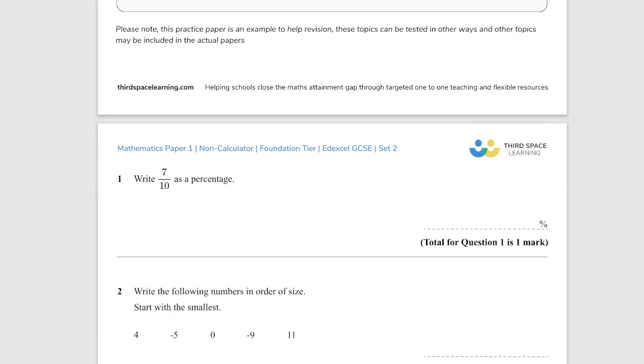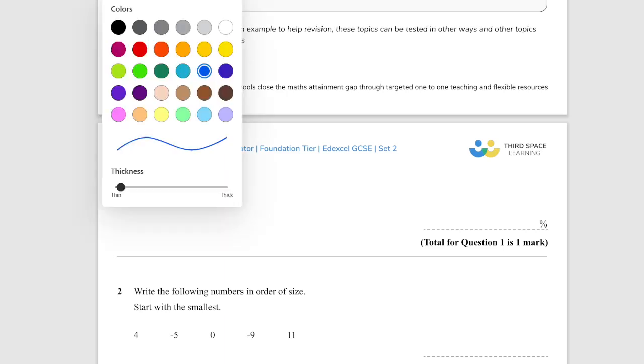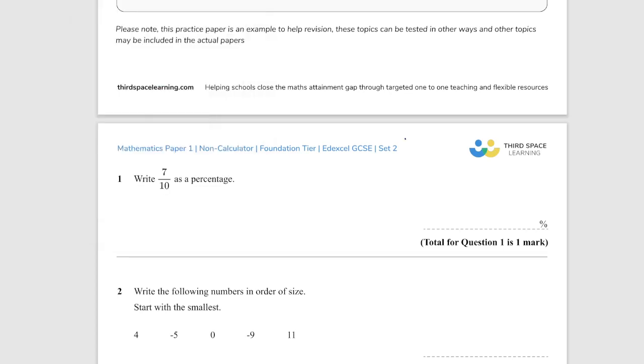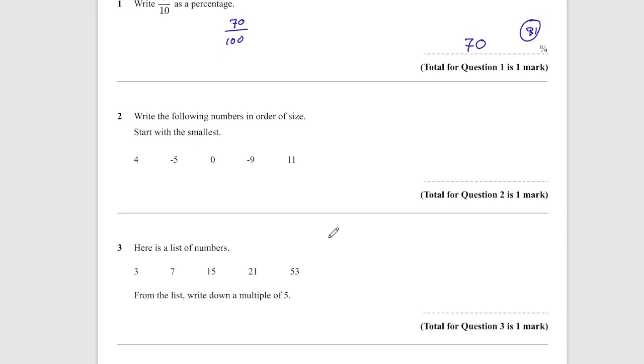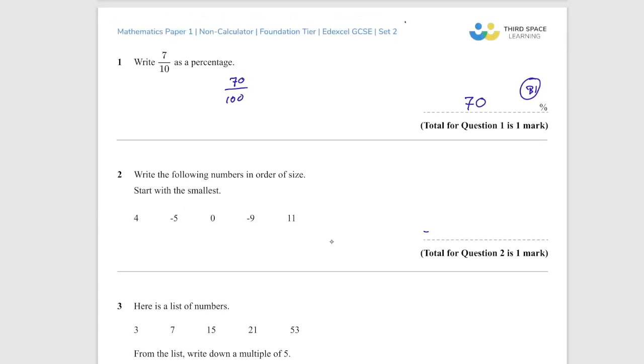Question 1, write as a percentage 7 tenths. So 7 tenths as a percentage, that's going to be the same as 70 out of 100, which is going to be 70%. That's a B1 mark. For question 2, write the following in order of size smallest first. So in this series we start with minus 9, minus 5, 0, 4 and 11. That's a B1 mark, correct answer only.